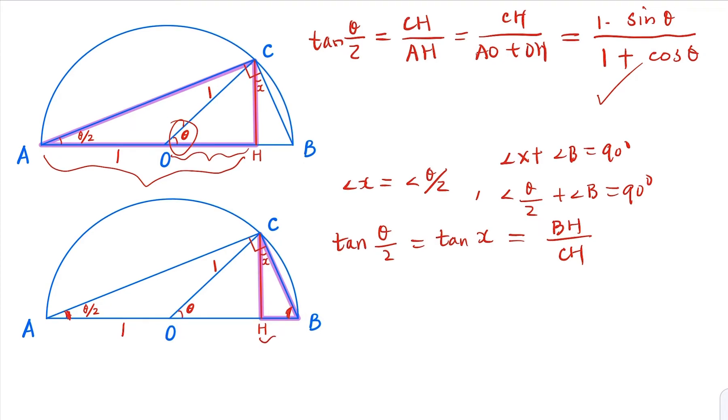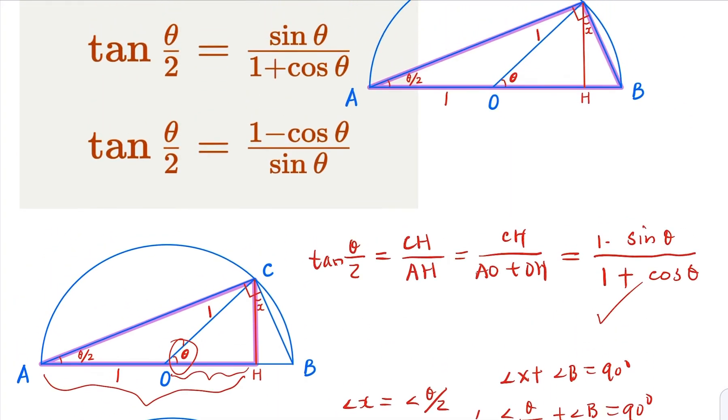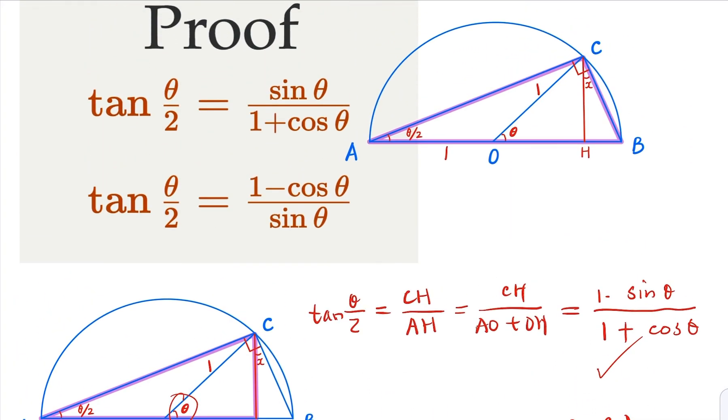Now BH here is OB minus OH over CH. Now OH here is cosine theta. So in other words, OB is the radius 1 minus cosine theta over CH, which is sine theta. And this is the second form of the formula. So we proved both formulas here.